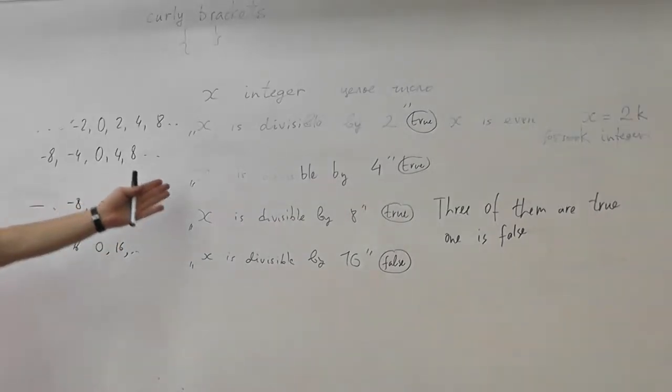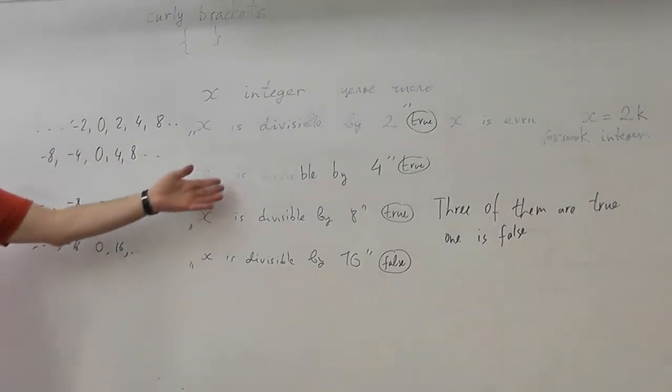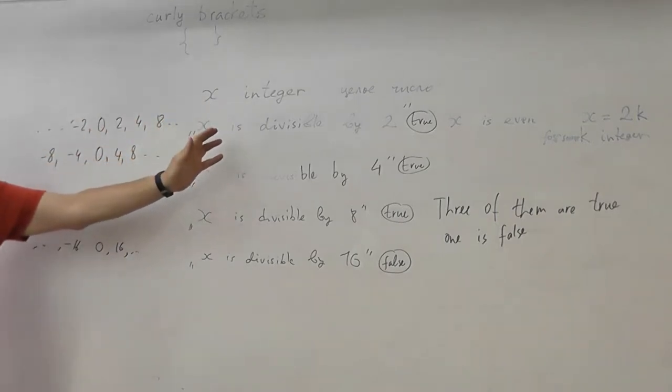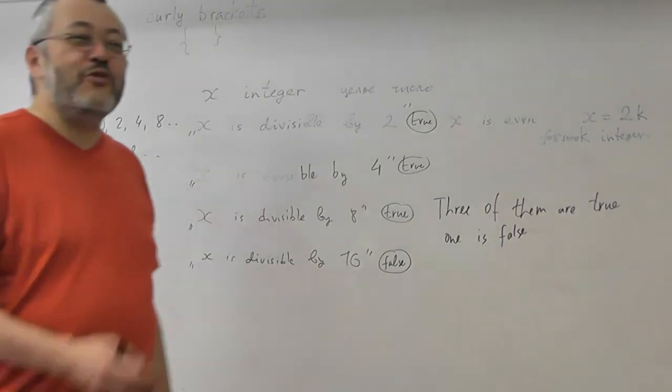Well, what, for example, number could be on the board? How much? For example, eight. If eight is written, then look, eight is divisible by eight, by four, by two, but not divisible by sixteen. That is, here. But maybe there is some other case when some other rules apply, or is this the only possibility? Well, what can you say?